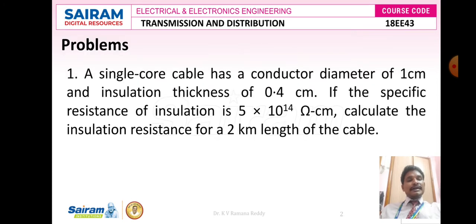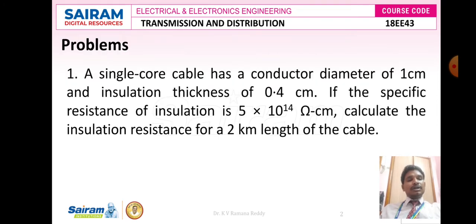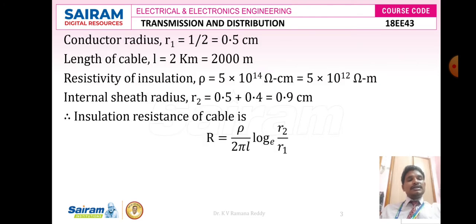The insulation thickness is given as 0.4 centimeter. Therefore r2 = conductor radius + insulation thickness = 0.5 + 0.4 = 0.9 centimeter. The insulation resistance formula is: R = ρ/(2πl) × log_e(r2/r1).